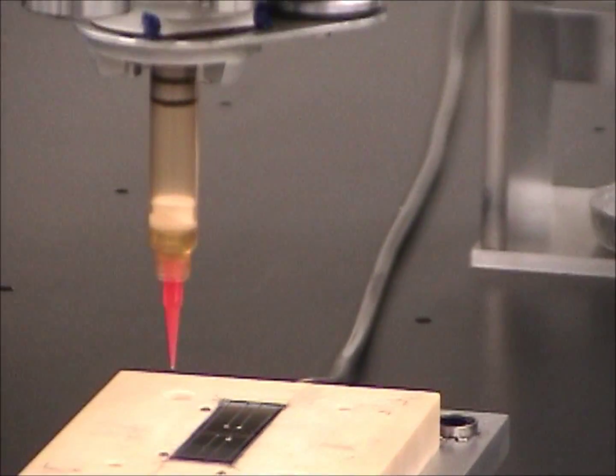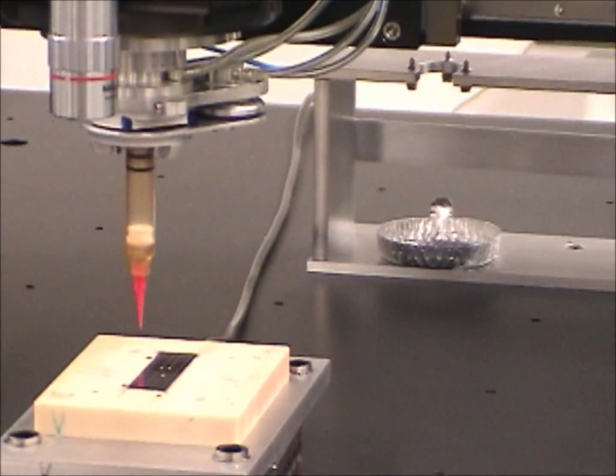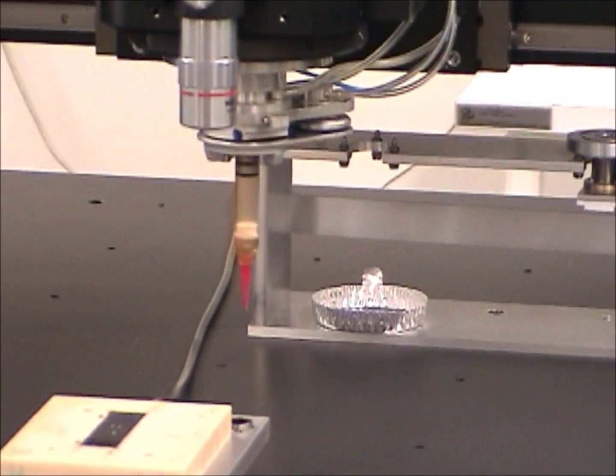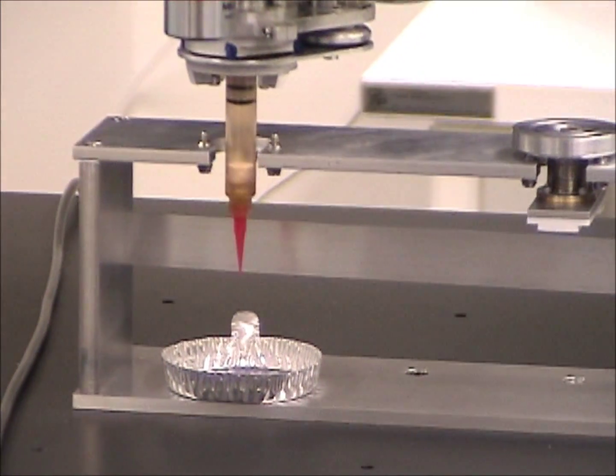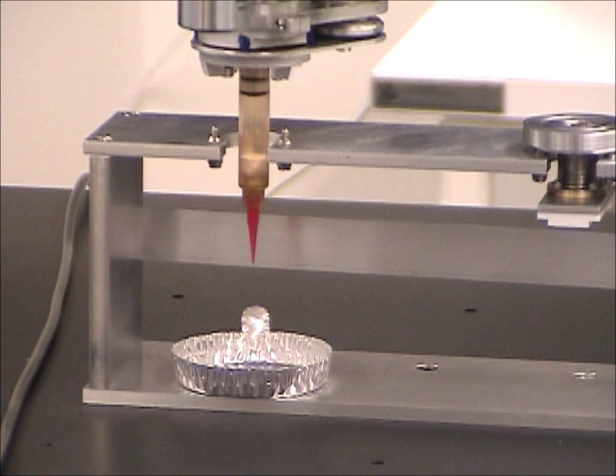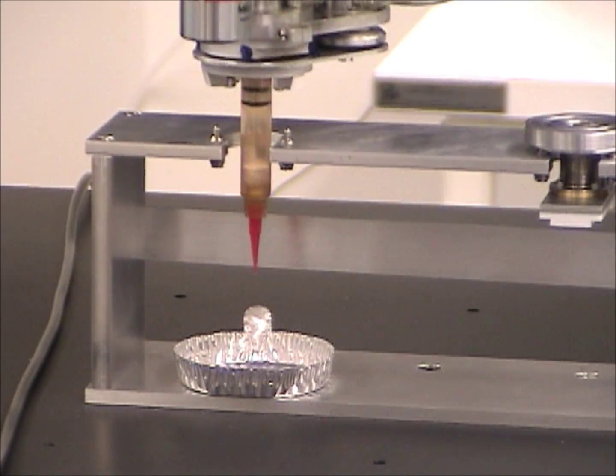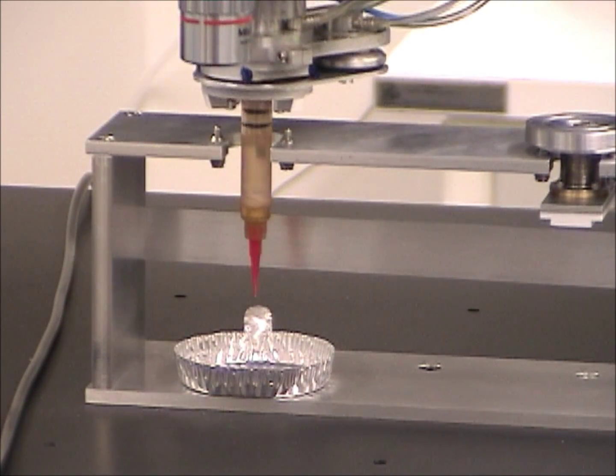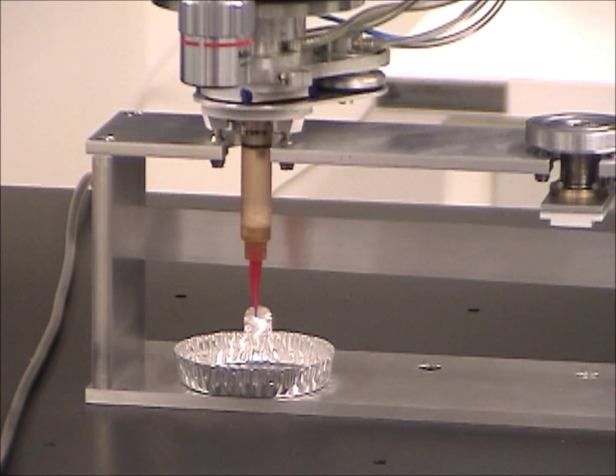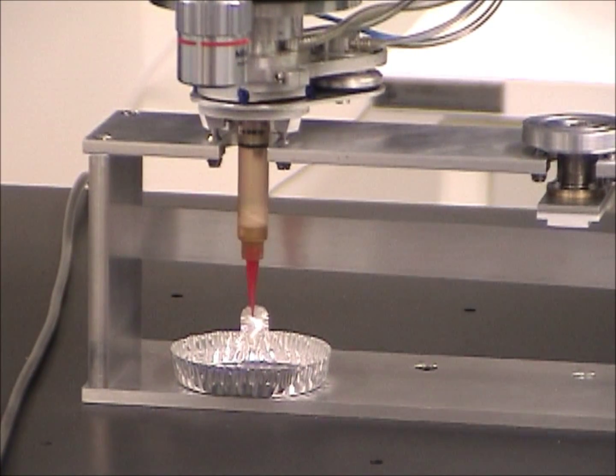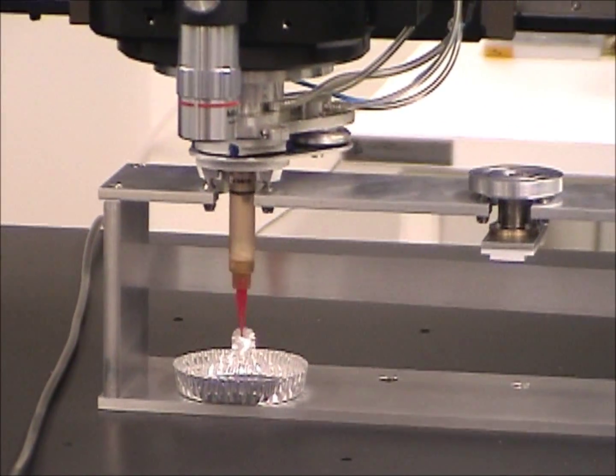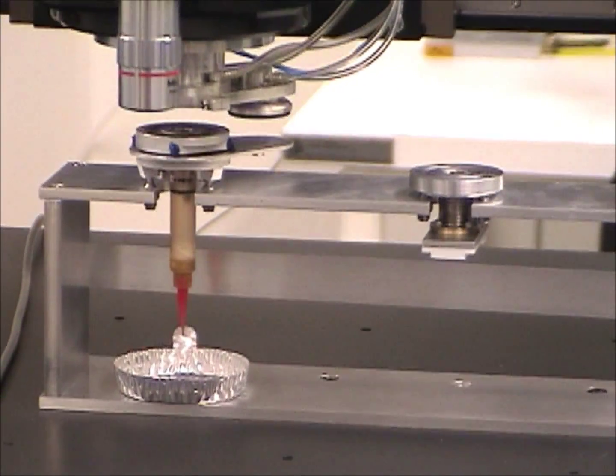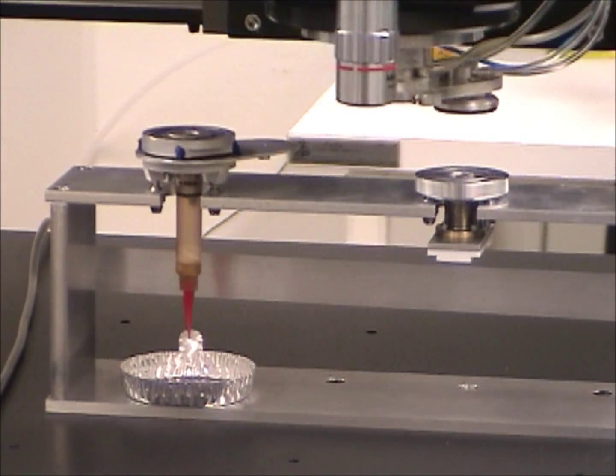Then the gantry will move to return the glue dispensing tool to the tool rack. And moves to pick up the vacuum pickup tool in the tool rack.